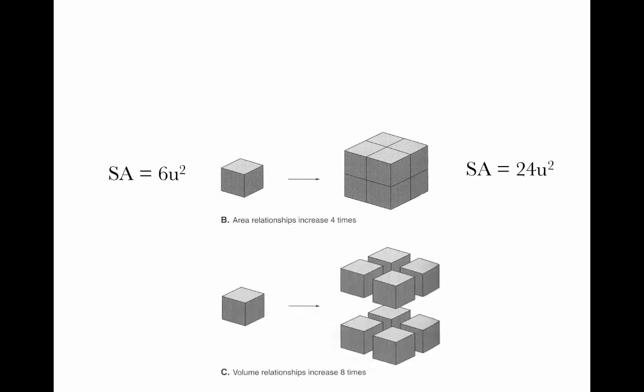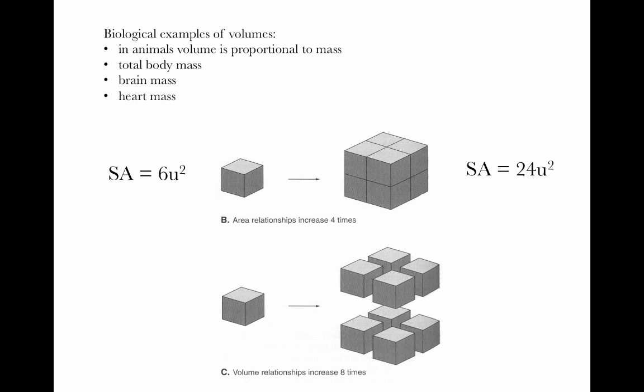Now let's look at volume. In biology, volumes themselves don't come into play very much directly, but in animals, volume is generally proportional to mass. So we can think about mass as a stand-in for volume. Examples include total body mass, brain mass, and heart mass, which all scale as volumes. The volume of a cube with side length 1u is u cubed.